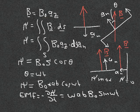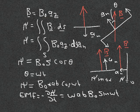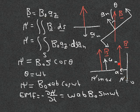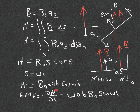The flux is ψ = B₀ · S · cos θ, where the area S = a·b. Since the loop rotates with angular velocity ω rad/s, θ = ωt, so the flux is ψ = B₀ · a · b · cos(ωt).